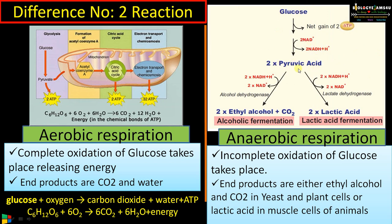This pyruvic acid is either converted to ethyl alcohol and carbon dioxide, which is called alcoholic fermentation — occurring in yeast and plant cells — or this pyruvic acid is converted to lactic acid by the lactate dehydrogenase enzyme, occurring in animals, especially in muscle cells, and also in some bacteria.